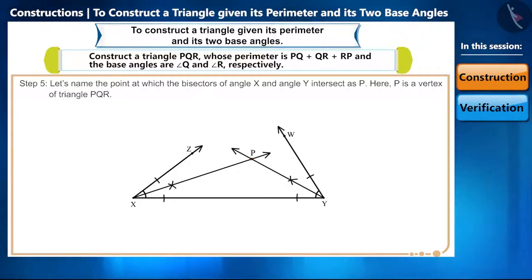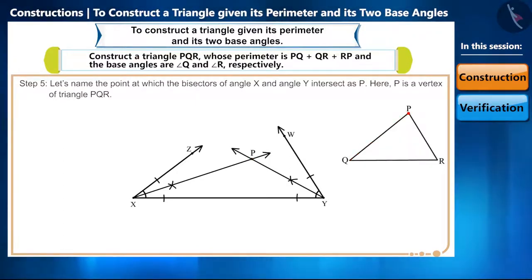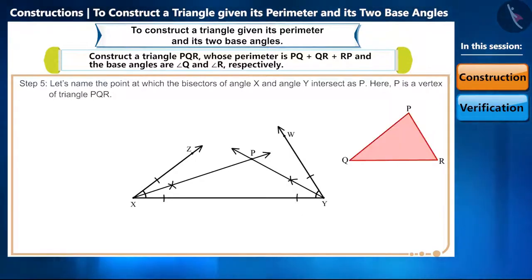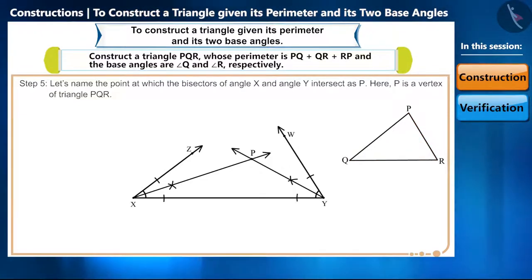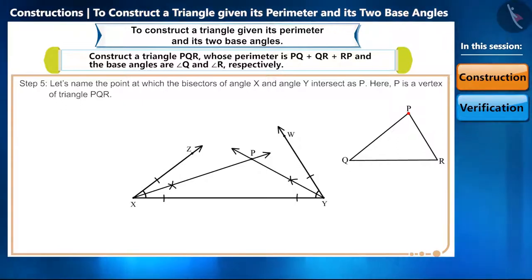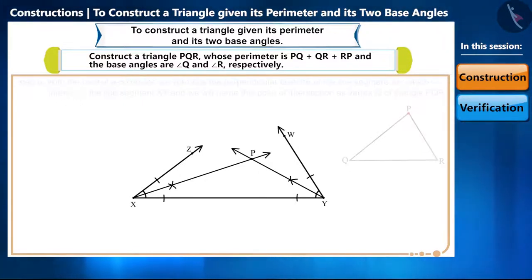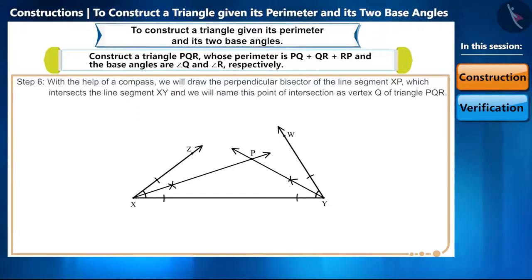Step 5: let's name the point at which the bisectors of angle X and angle Y intersect as P. P is a vertex of triangle PQR. Why did we choose vertex P? Because angle Q and angle R are base angles, therefore we take the point of intersection as point P, which is not the base angle.